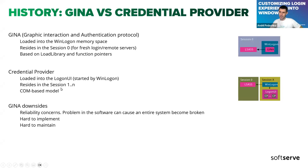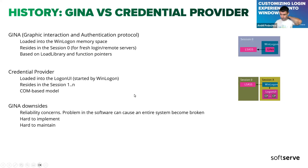What's more important — and different from GINA — is that credential provider uses a COM-based model. All you have to do is have implementations that inherit some specific interfaces, which is much easier compared to function pointers. In summary about GINA: reliability concerns — a problem in software can cause the entire system to become broken. It's very hard to implement and hard to maintain. Time has proven that credential provider is a good approach — it was introduced in Vista, and Microsoft still sticks with this concept through Windows 11.